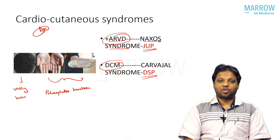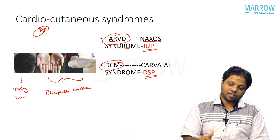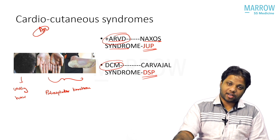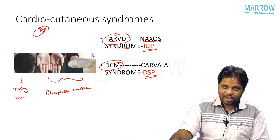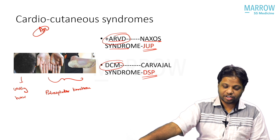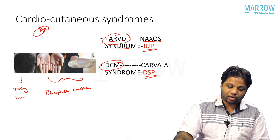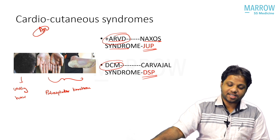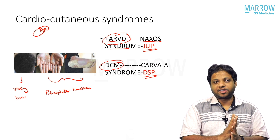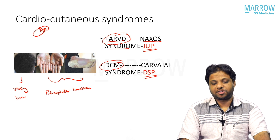To summarize the cardio-cutaneous syndromes: both are autosomal recessive. Woolly hair plus palmoplantar keratoderma plus ARVD is Naxos, due to a junctional plakoglobin mutation. Woolly hair plus palmoplantar keratoderma plus DCM is Kavajal, due to desmoplakin mutations. This has been asked extensively in exams.